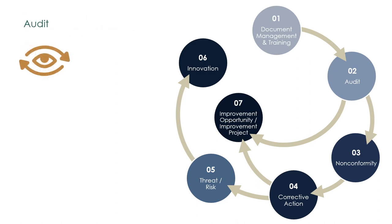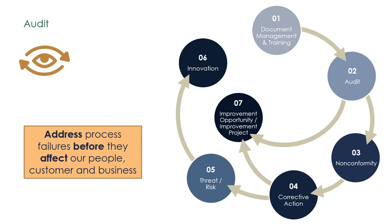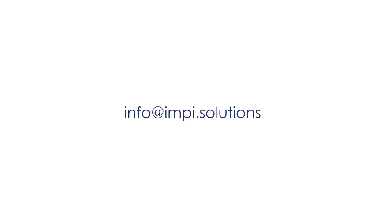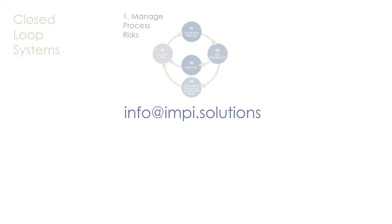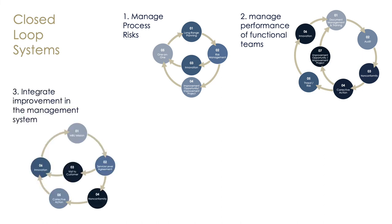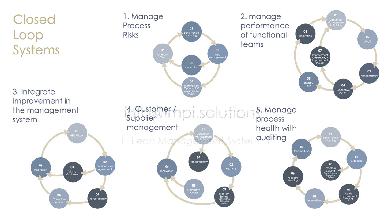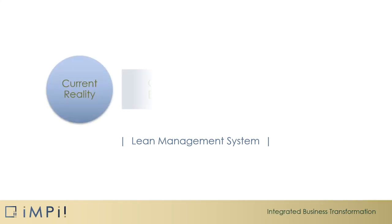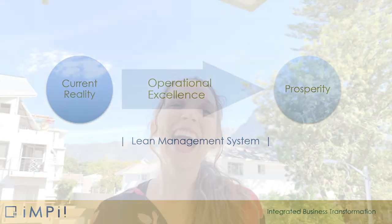So with this audit loop we observe the process — if it is not healthy, we improve it before process failures affect our people, the customer, and the business. The improvement is documented in the adjusted standard, our people are trained and competent, and the loop is closed. With closed loop 5 we've reached the end of the series. These five closed loops are examples of how IMPI solutions can mesh together to support your lean management system and support the journey of operational excellence toward a prosperous organization.